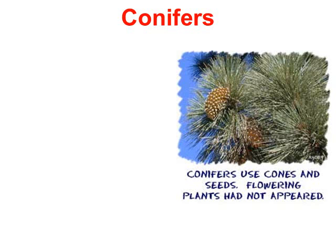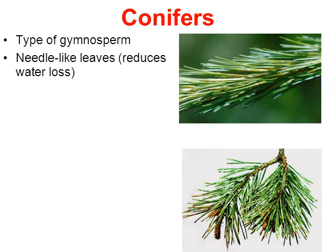Let's look at the gymnosperms, specifically the category called conifers. Conifers are a type of gymnosperm and these are the ones we're going to focus our attention on today. One of their defining characteristics are their needle-like leaves, which helps reduce water loss. Many of these grow in cold environments, and having big, broad, flat leaves would cause them to lose too much water through evaporation. By having needle-like leaves, it reduces their water loss, which is really important considering they go for months without rain.